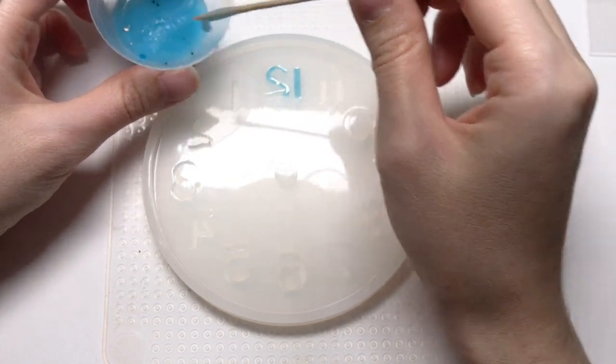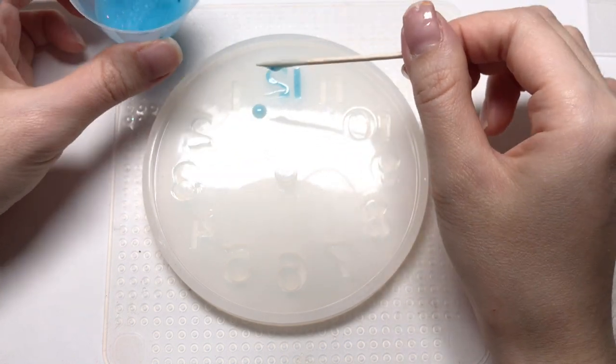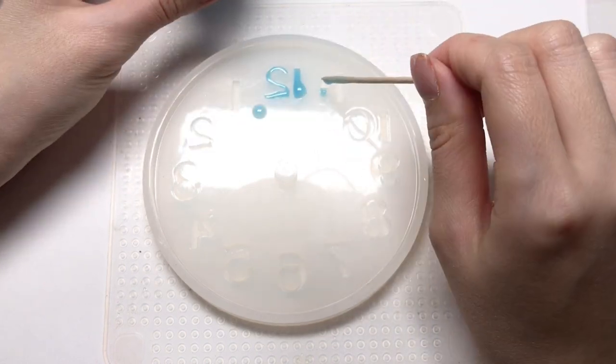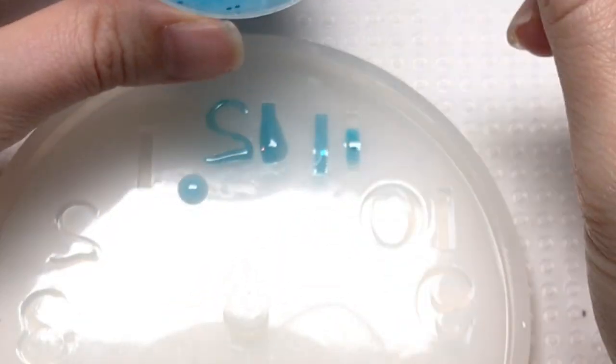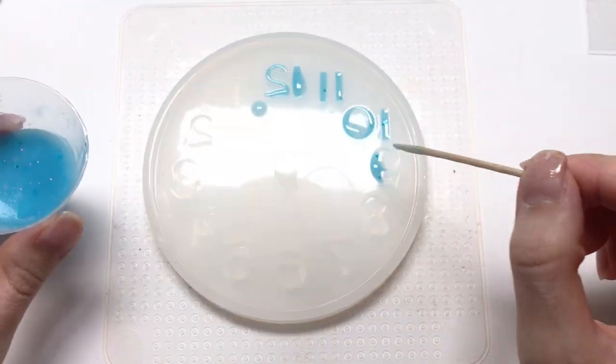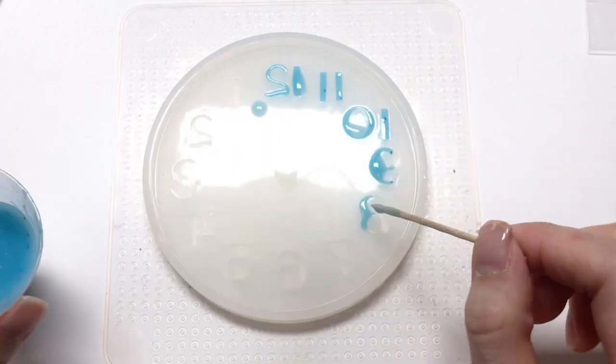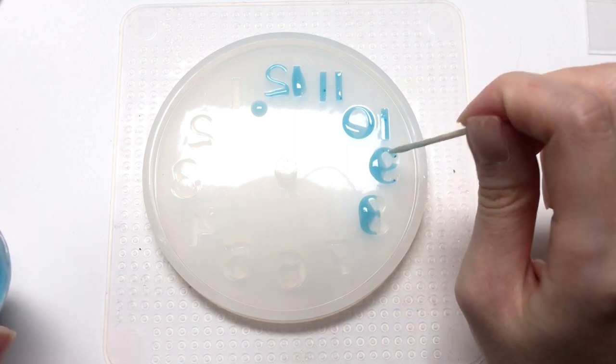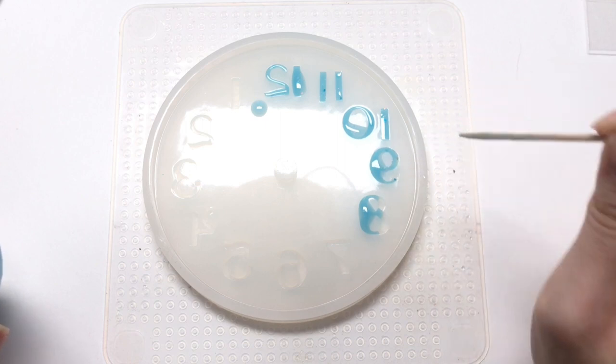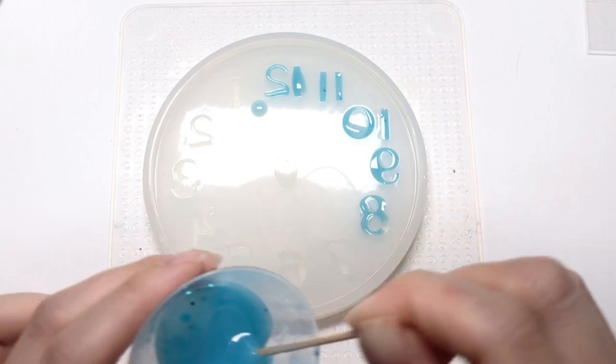And if you do pour too much, don't worry too much about that either. You can always pick up excess with a q-tip. I'll show you guys later. Sometimes you can help push it along if it's not really flowing that easily. Slow and steady. Let it flow.